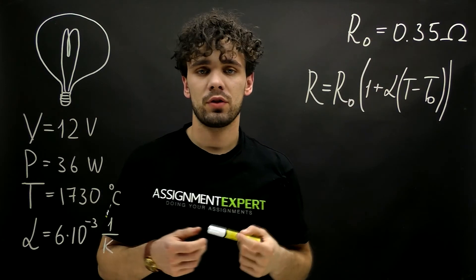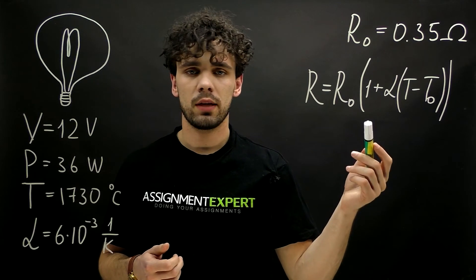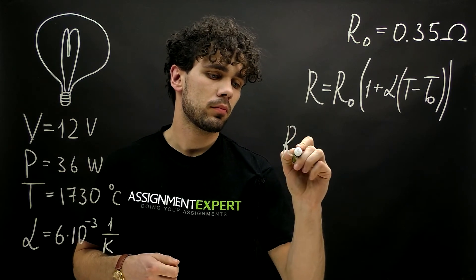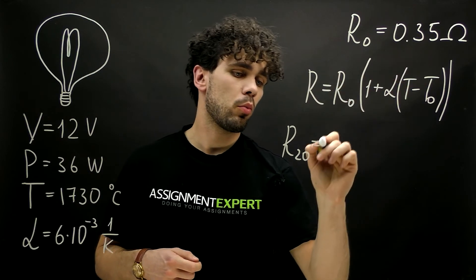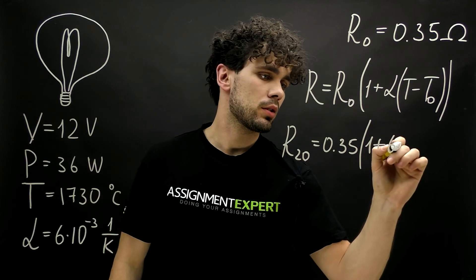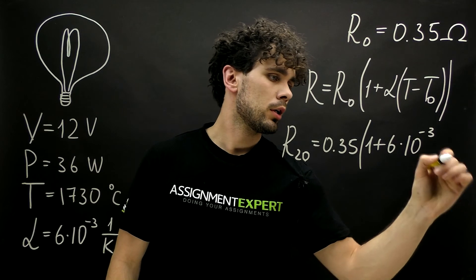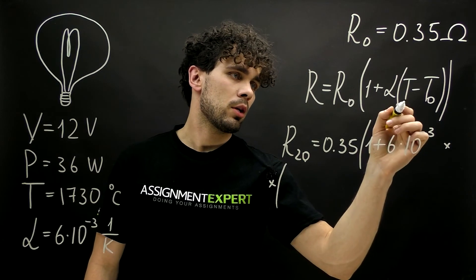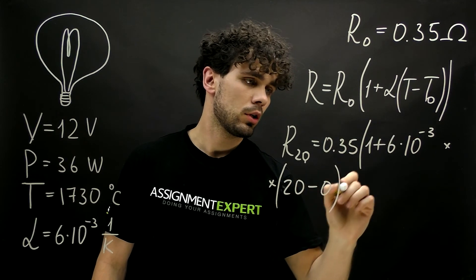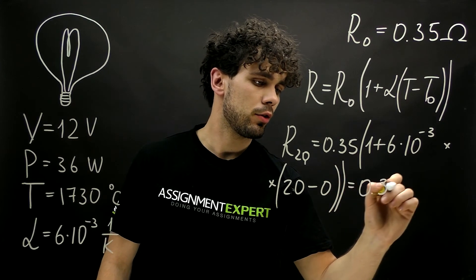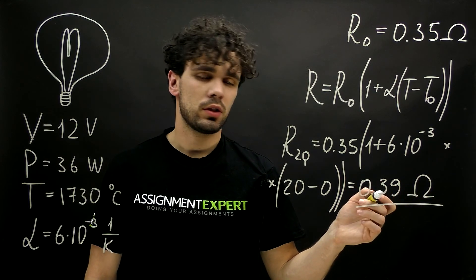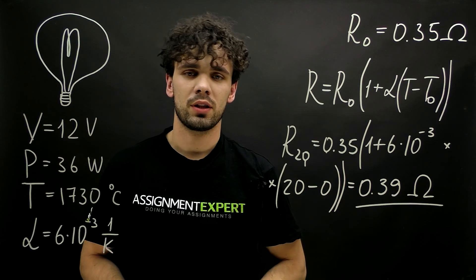Now that we found the resistance at the reference temperature zero degrees Celsius, we can use the same formula to find the resistance at 20 degrees Celsius. R at 20 equals 0.35 times one plus six times ten to the negative third power times temperature, which is 20, minus the reference temperature zero. This gives us 0.39 ohms — the resistance at room temperature 20 degrees Celsius. Thanks for watching and I'll see you next time!